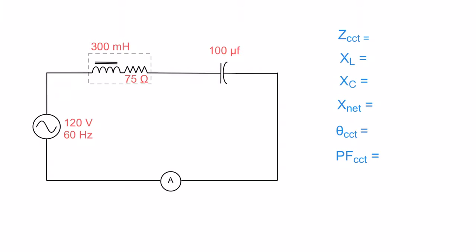Now in our next slide, we've got all our values here. So what I need to do is take this guy and convert it to an XL and this guy here and convert it to an XC. Through the miracle of modern technology, there you have it. Instead of 300 millihenries, now I have an XL of 113 ohms. Instead of 100 microfarads, I have an XC of 26.5 ohms.